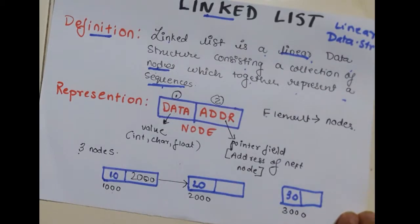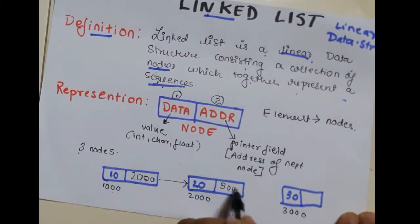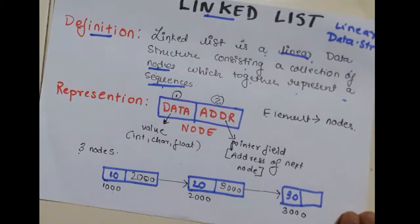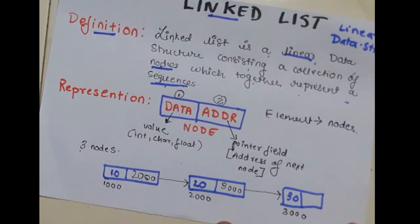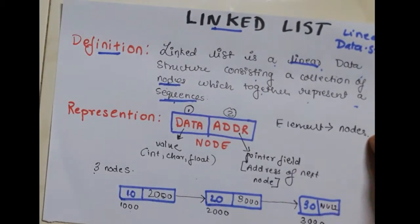For example, if you want to give a message to your friend, you need their address or phone number to pass the message. Similarly, if you want to go from this node to the next, you need the address of the next node. So we write 3000 here, and after reading this 3000 we know the next node is 30. After 30, there are no more nodes. This is how a linked list is formed — it is a sequence of nodes, a collection of nodes creating a sequence.